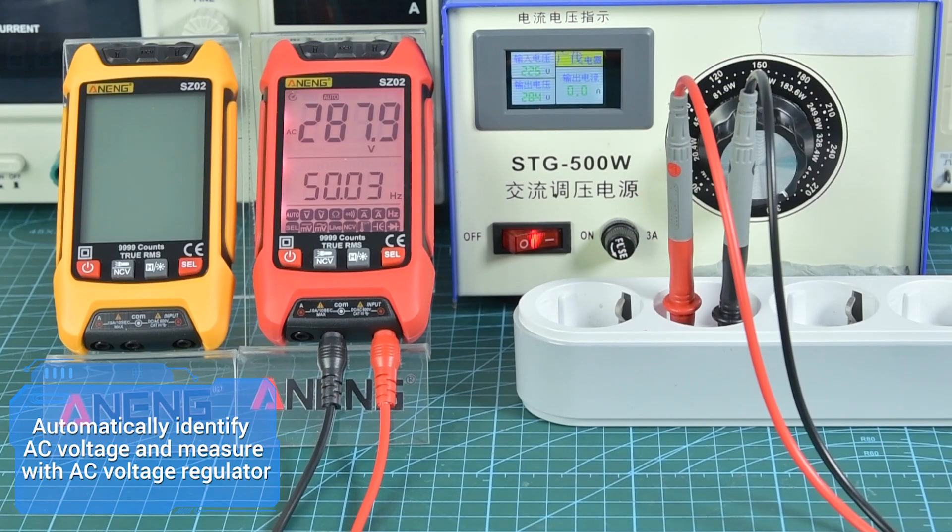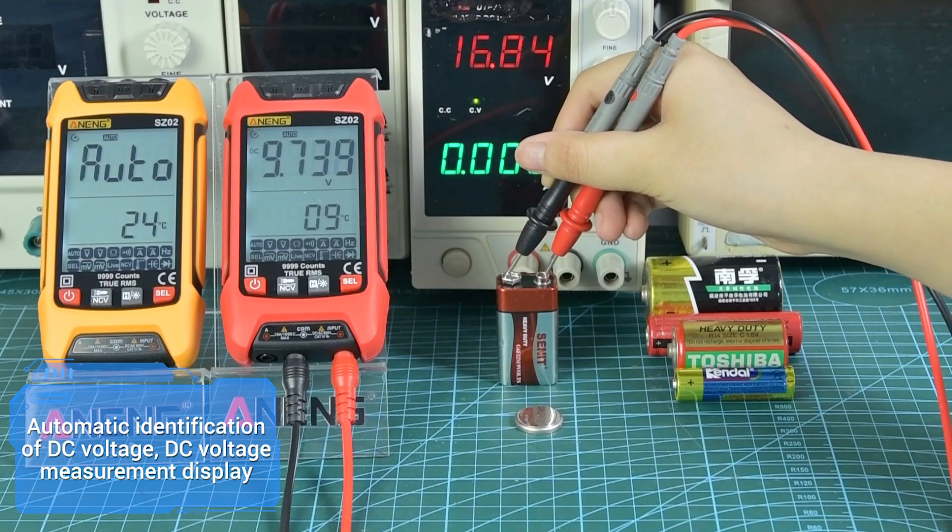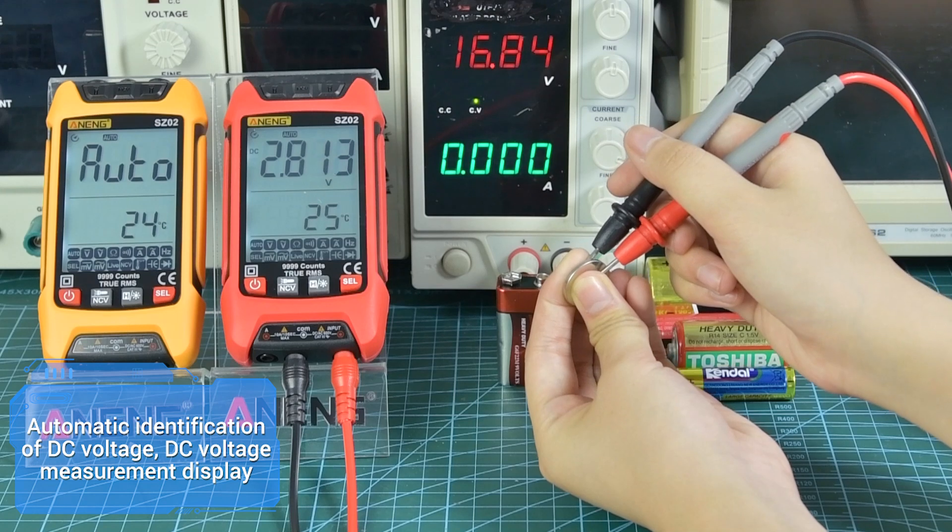It can measure with AC voltage regulator and automatically identify DC voltage for DC voltage measurement display.